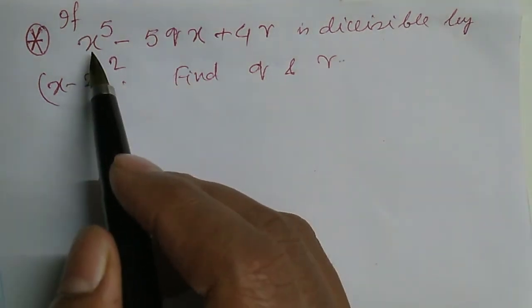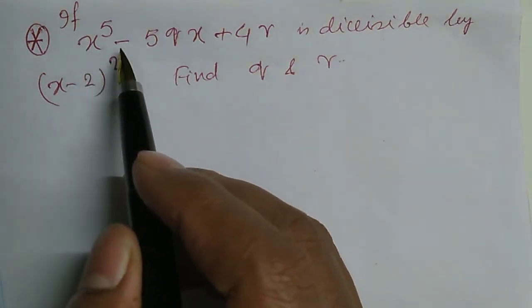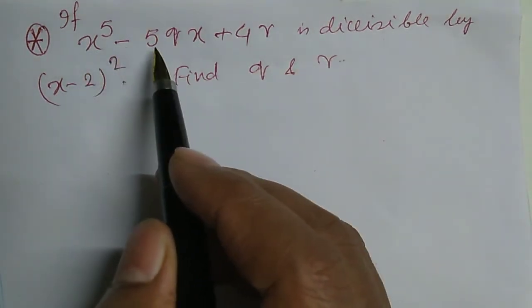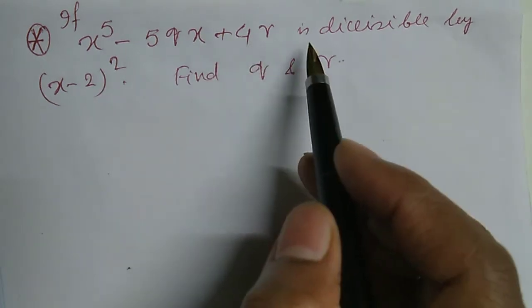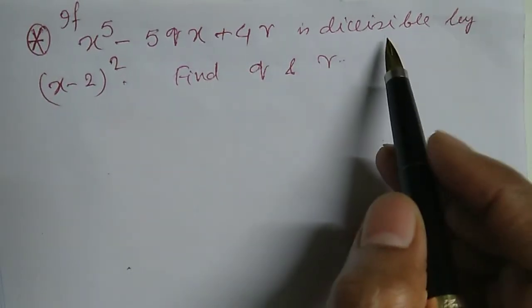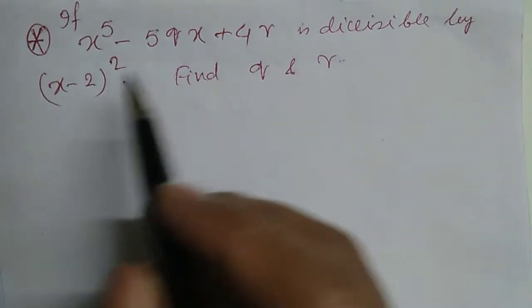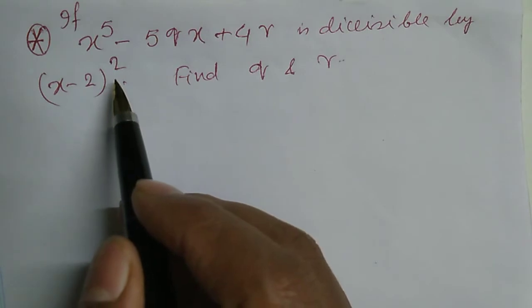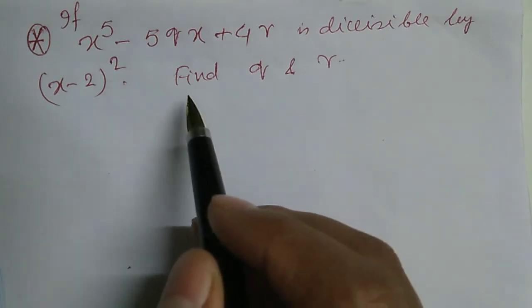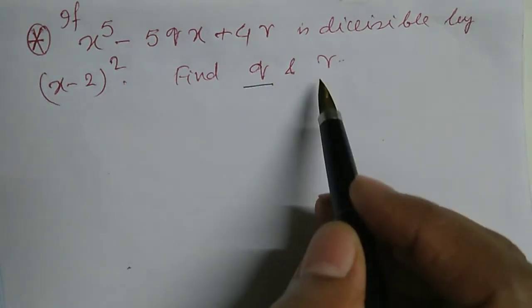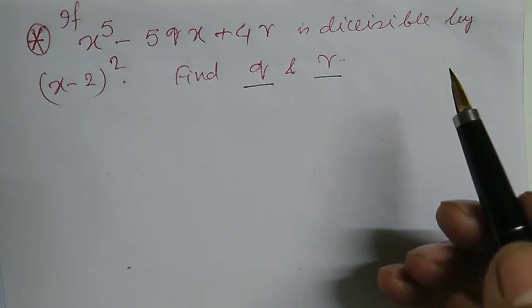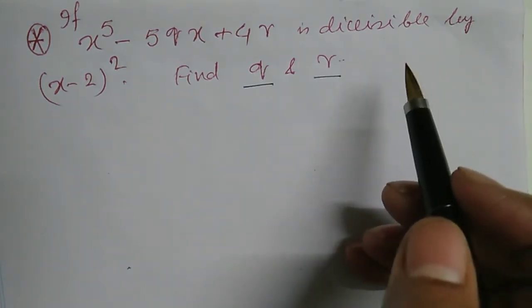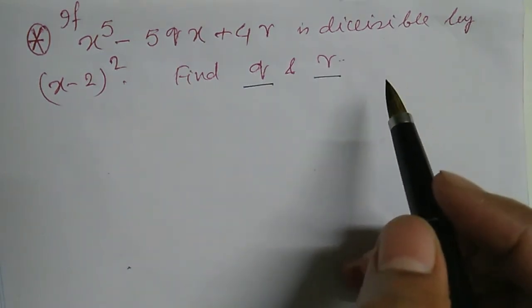If x to the power 5 minus 5qx plus 4r is divisible by (x minus 2) squared, find the value of q and r. This is a beautiful problem on factor theorem.